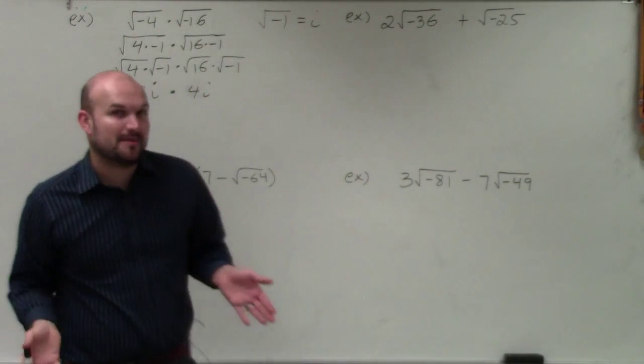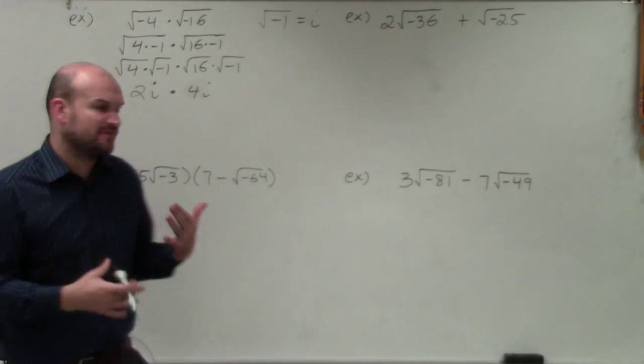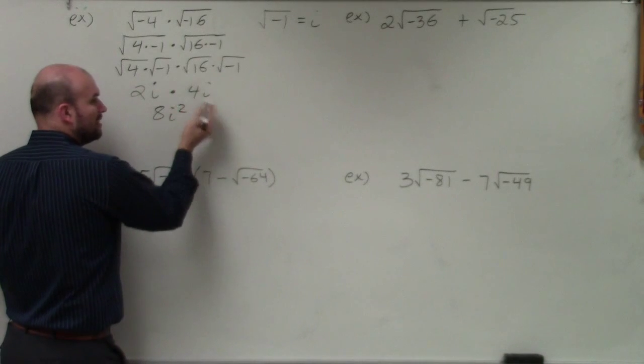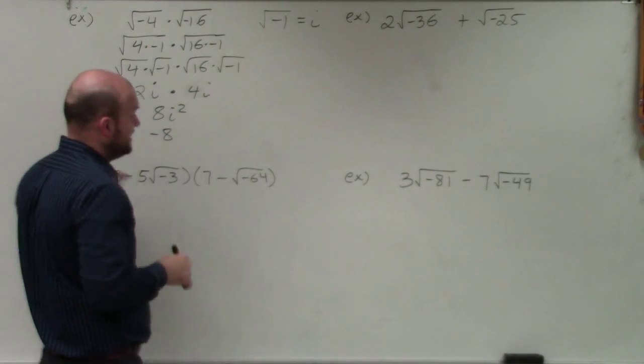Now when I have to apply my operation with complex numbers, we treat this just like variables, which is going to be 8 i squared. Well, i squared is negative 1, so that simplifies to negative 8.